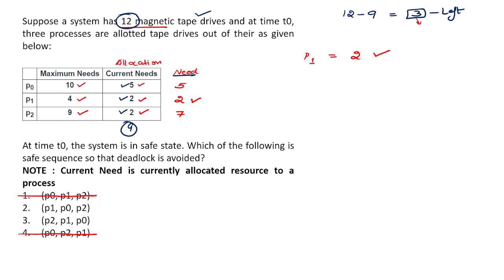Now process P1 has fulfilled its need, so what does it do? In deadlock we learned that after requirement is fulfilled, every system has to release the resources. So when P1 releases all the resources, that means we have now 3 plus 2, that is 5 resources available.